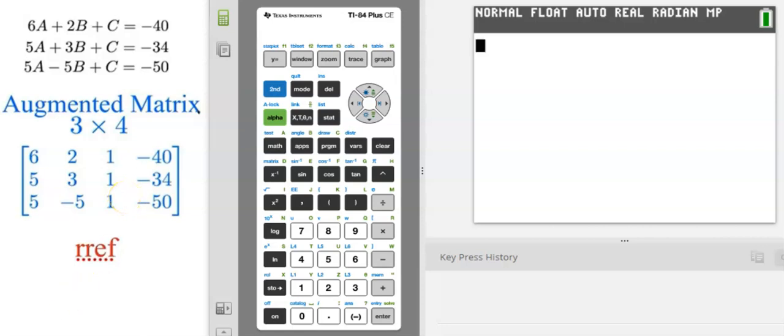To do that, we want to use the matrix menu, which is a second function of your inverse X button. We're going to hit second matrix.